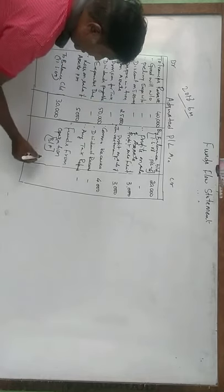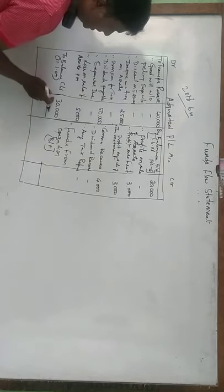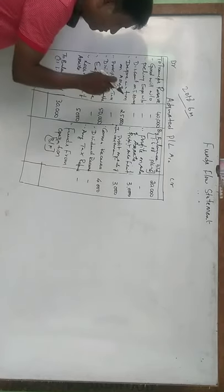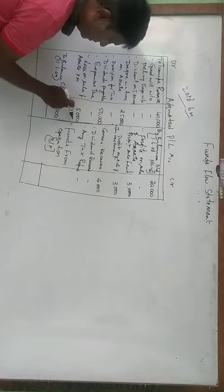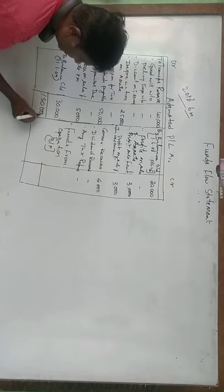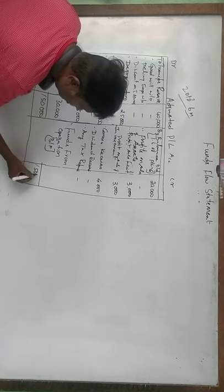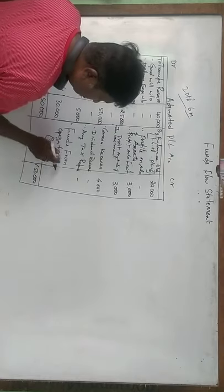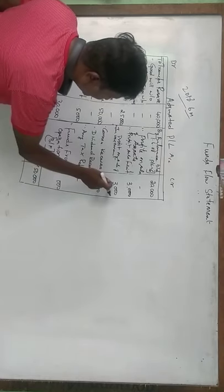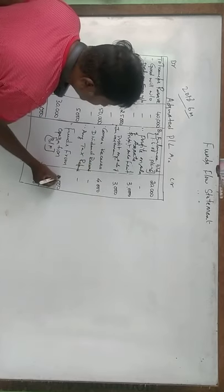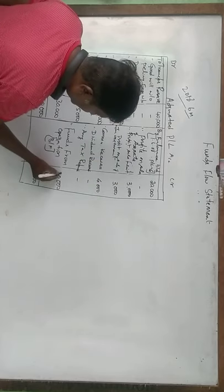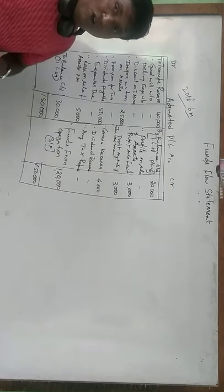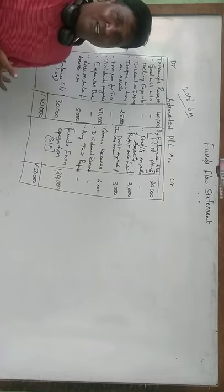Debit side is more. So 30 plus 40 is 70, plus 50 is 120, plus 20 is 140, plus 10 is 150 — so 1,50,000 rupees. From this 1,50,000 rupees, if you minus all these three items, you get funds from operation. 4 plus 3 plus 3 is 10, so 1,40,000 rupees is the funds from operation. Simple — we easily got 6 marks.